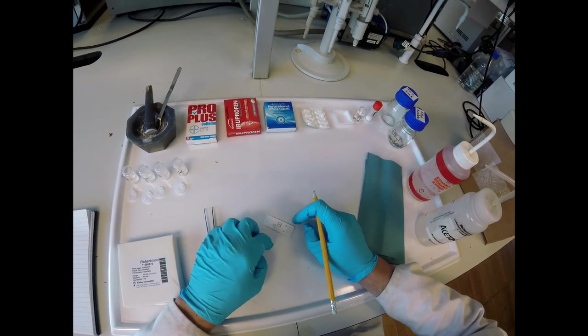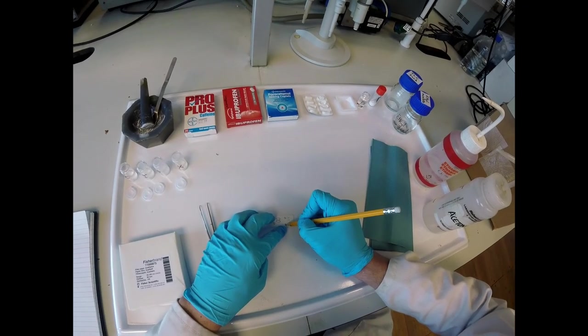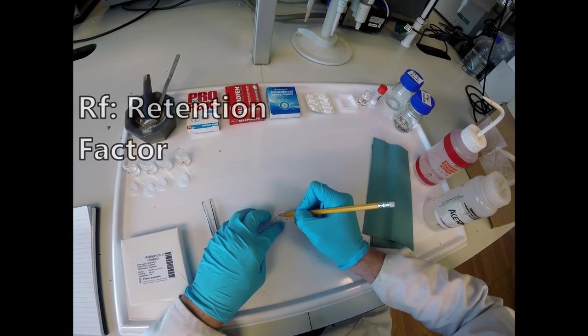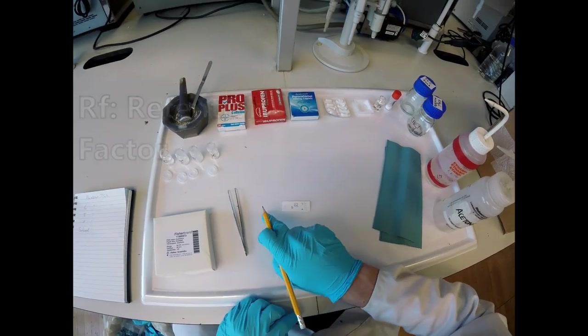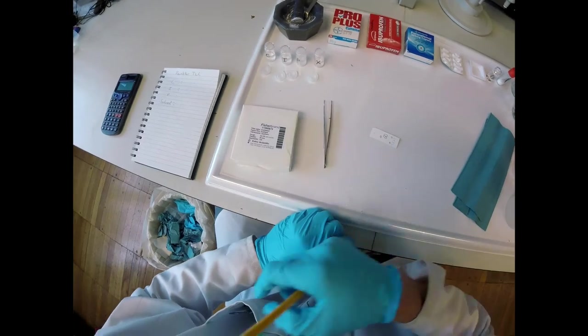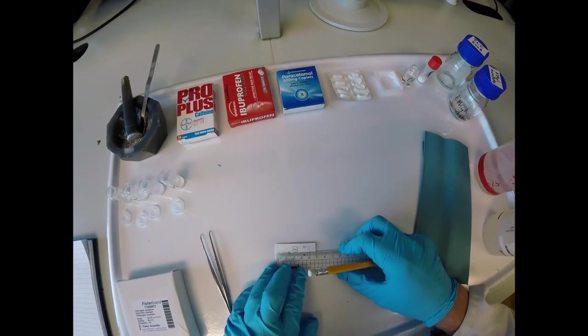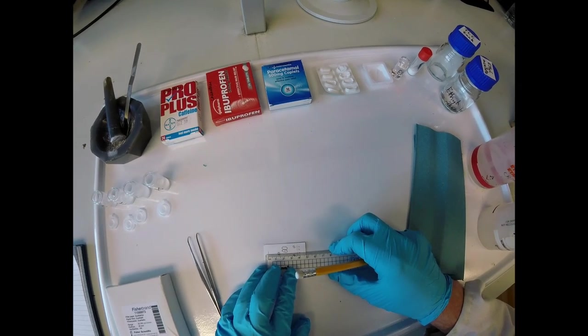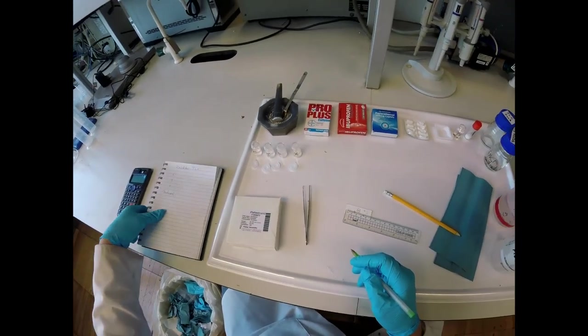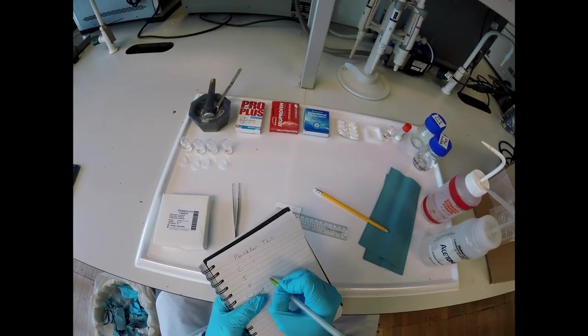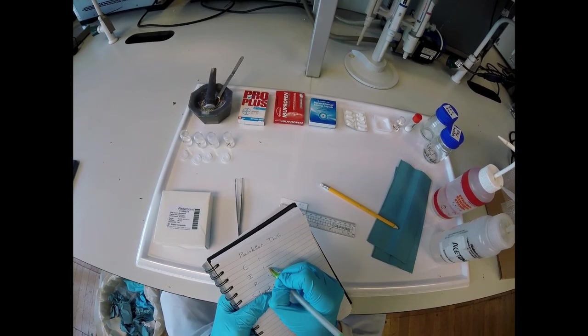The last thing that we can do is just record some RF values for each of those components. We'll need the height that each component ran at, taking it halfway up the spot, and also the height that the solvent front ran at. So just measure those quickly. The solvent is at 3.7 centimeters, so all of these sums are going to have 3.7 on the bottom.